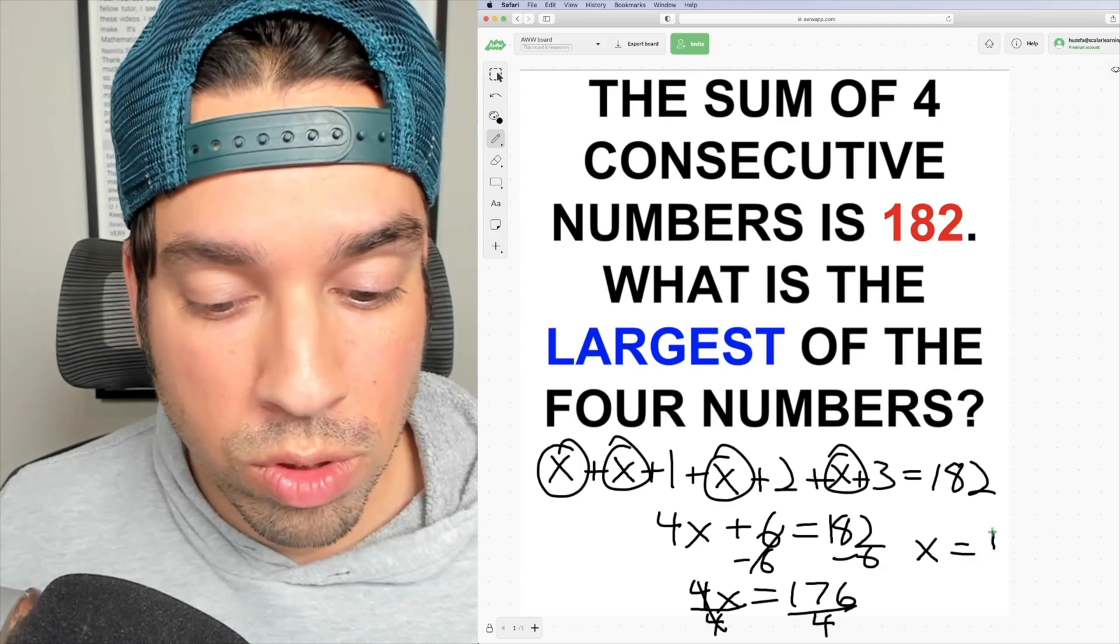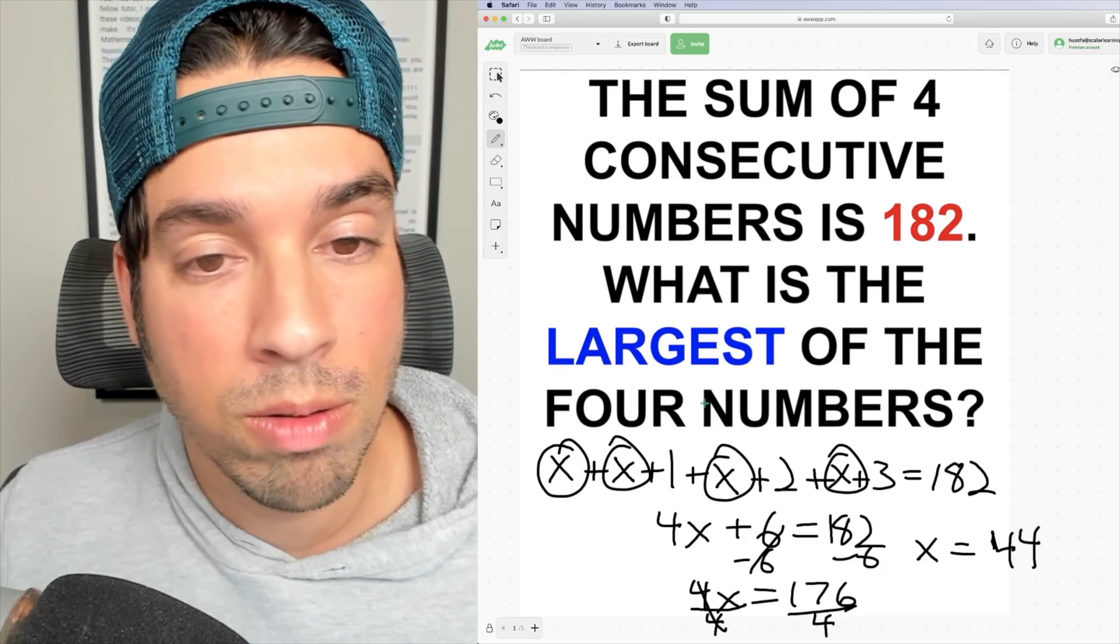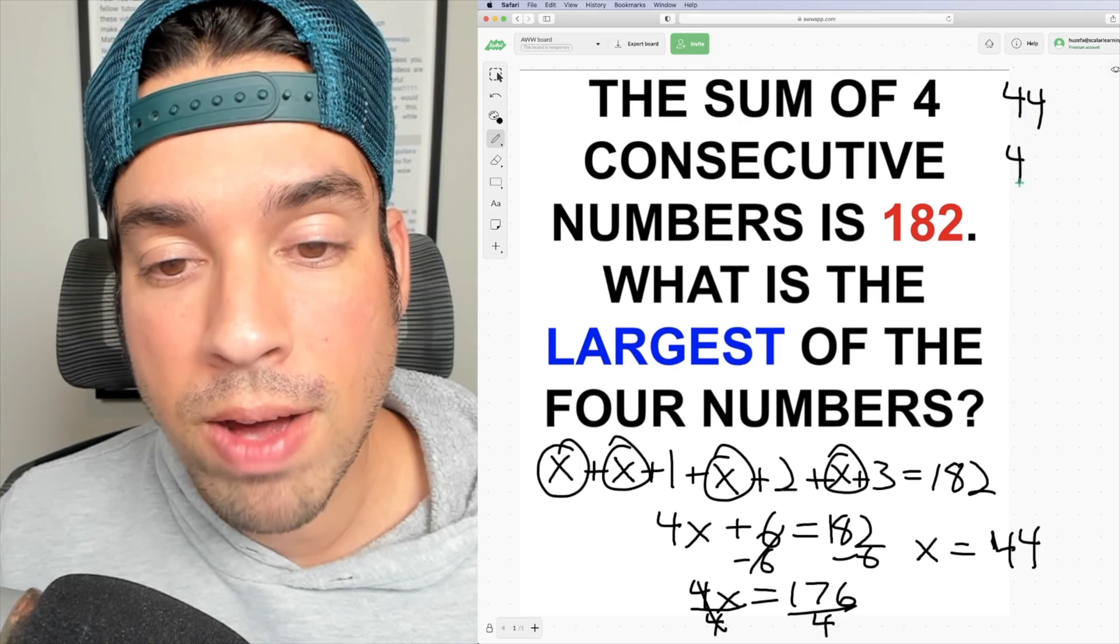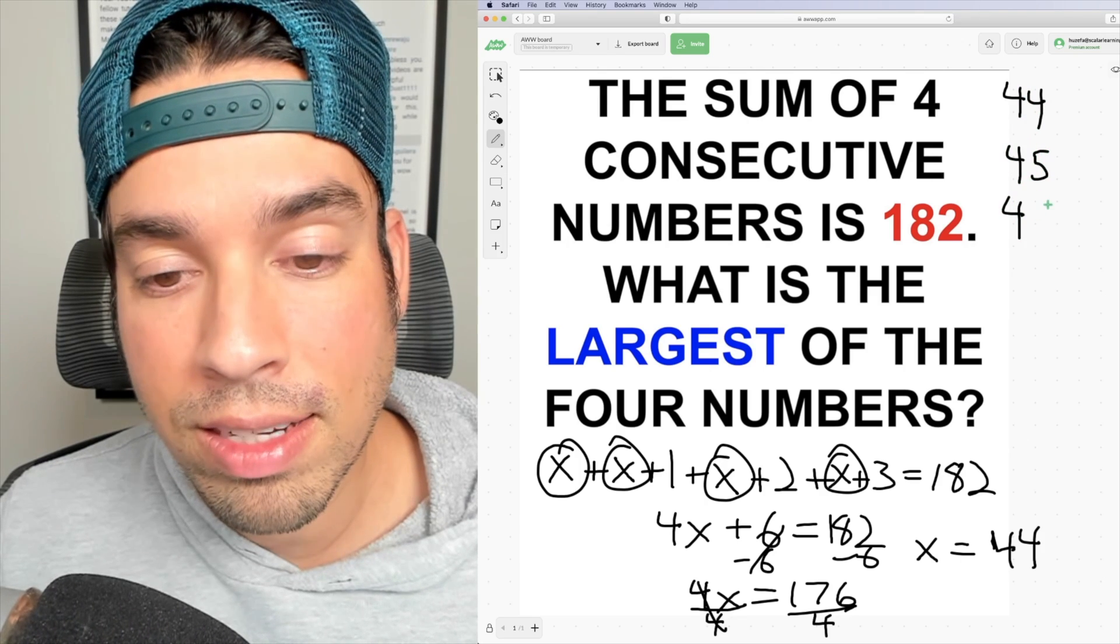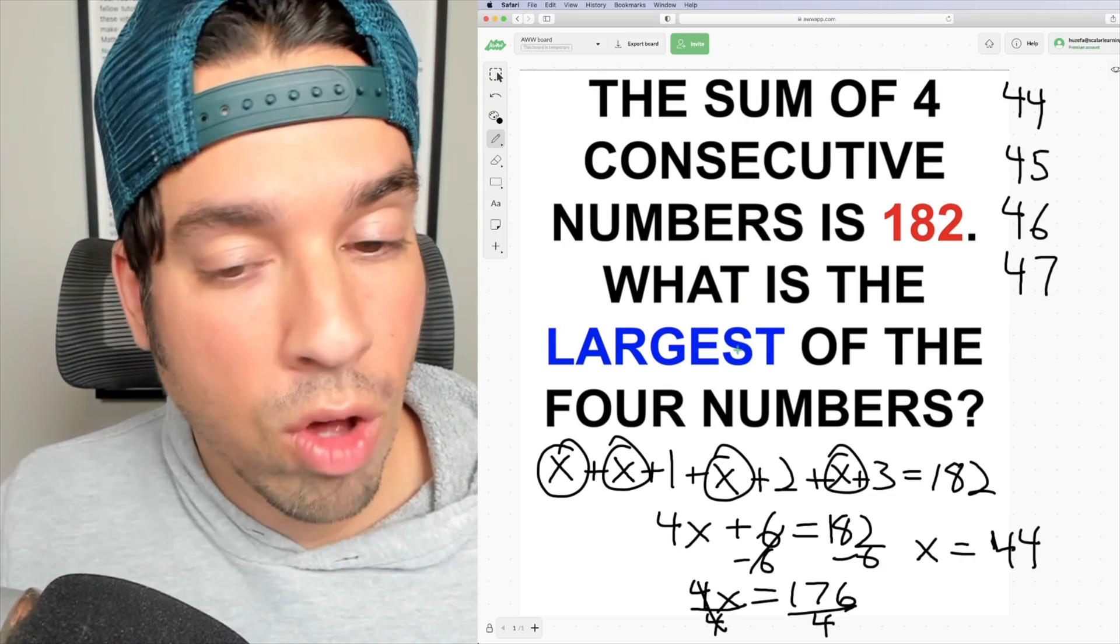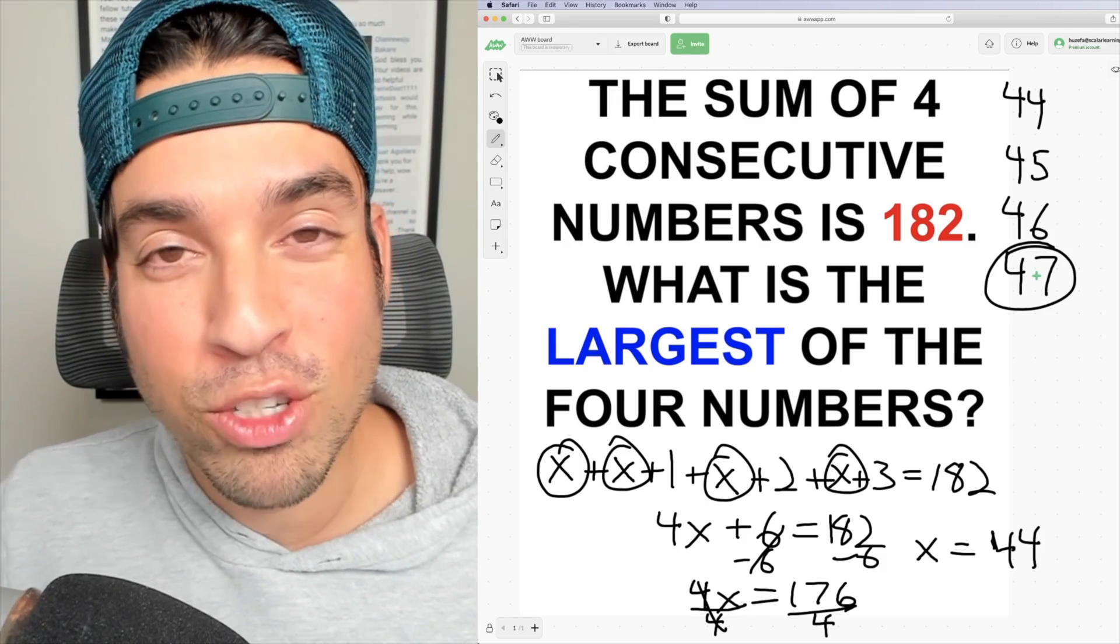So X equals 44. But again, that's not our answer. That's the smallest number. The numbers will be 44, 45, 46, and 47, which means that the largest of the four numbers will be 47. I hope you enjoyed this math puzzle.